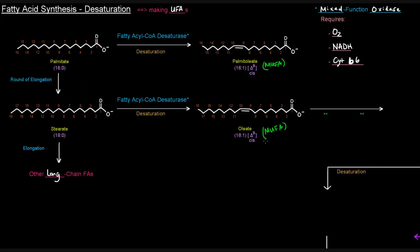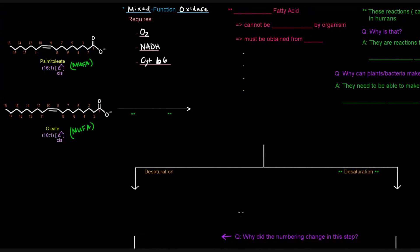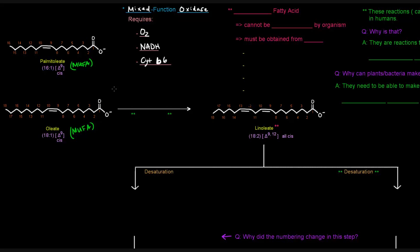What if we wanted to get PUFAs — polyunsaturated fatty acids? Well, we could take oleate and turn it into linoleate. The difference is that linoleate has one more double bond, giving it two total. It's written as 18:2, showing two degrees of unsaturation, specifically starting at positions 9 and 12 — so double bonds between 9 and 10 and between 12 and 13, and of course they are both cis. So this is a PUFA, a polyunsaturated fatty acid.